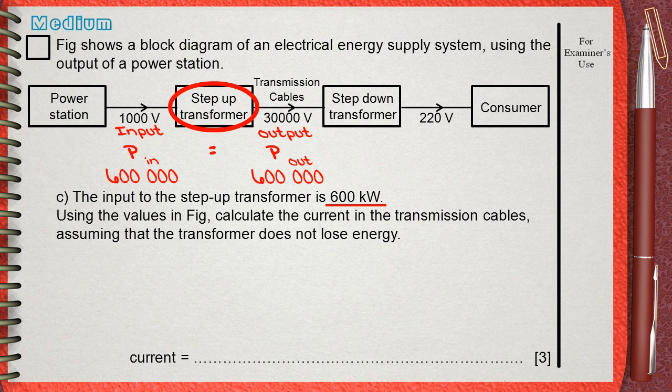So power input equals power output. Since power equals IV, current multiplied by the voltage, by simple rearrangement, I equals P over V.